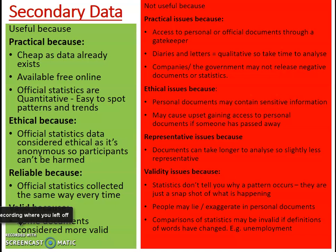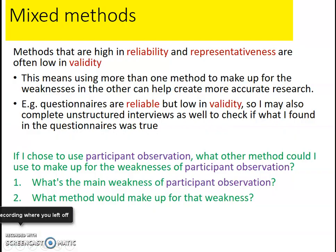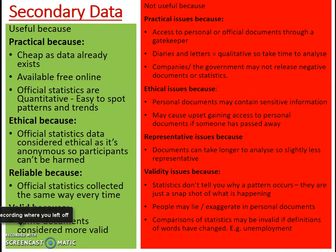Diaries, letters, and historical documents are qualitative, so they'll take a lot of time to analyze. Even content analysis takes time to read through documents and count occurrences, or to interpret documents for insight. In terms of access, companies or the government may not want to release particularly negative documents, or may withhold harmful statistics — so you might not be able to gain access to everything, which will ultimately affect the validity of your research.